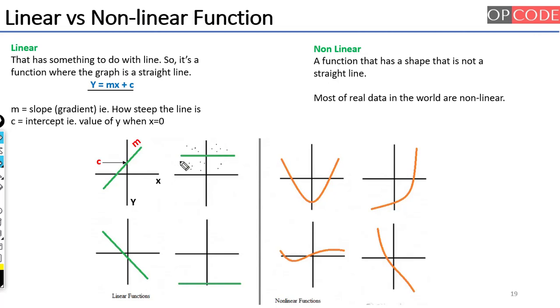So in case of linear function, we can easily differentiate the dogs with the cats by just creating a straight line. Let's take the same example here.